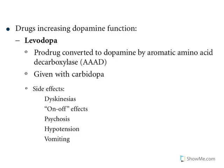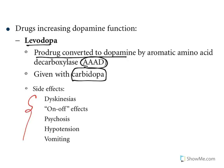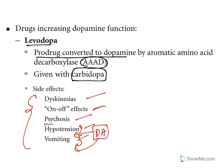Now let us see the individual drugs. Levodopa: as we have seen, it is a prodrug converted to dopamine by aromatic amino acid decarboxylase. It is given with carbidopa because peripheral decarboxylation has to be inhibited. Major adverse effects: dyskinesia — uncontrolled or unregulated motor movements due to excess levels of dopamine; on-and-off effects like contraction and relaxation; psychosis; hypotension; and vomiting. The hypotension and vomiting occur when levodopa is peripherally converted to dopamine. In the brain, excess levels of dopamine cause dyskinesia and psychosis.